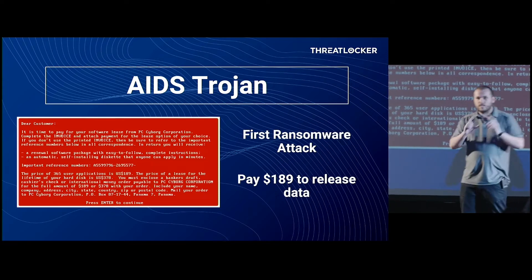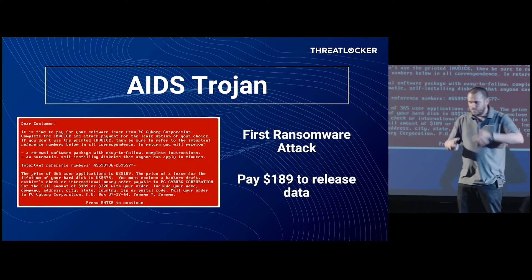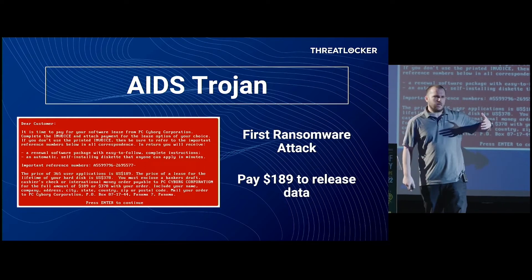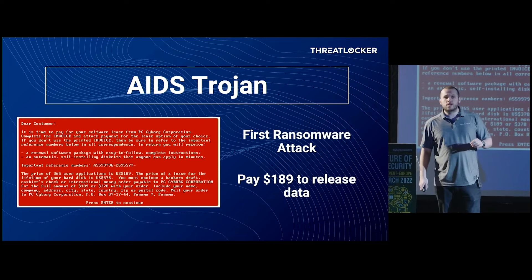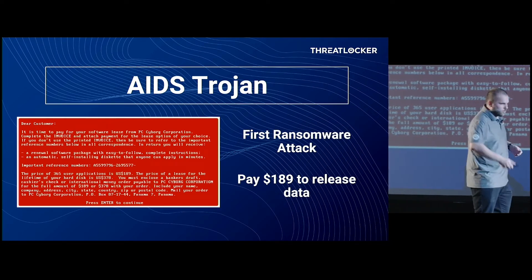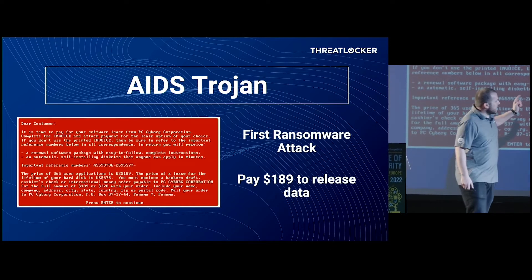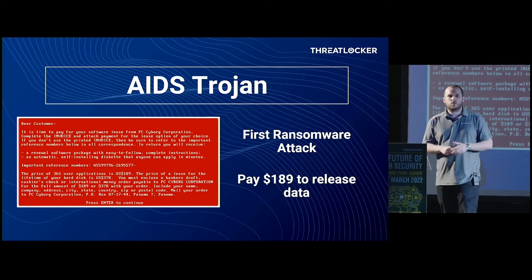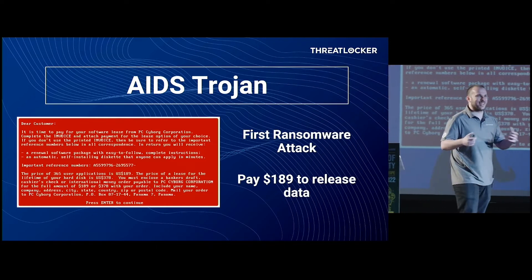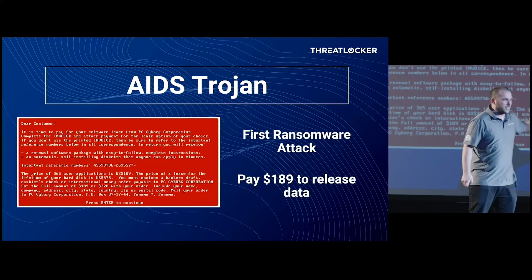Essentially it was a piece of malware sent out on floppy disks to AIDS researchers — that's where it got its name. It was actually sent out through a magazine. The researcher would plug it into their machine, it would install, and that malware was then active. After the 90th boot cycle, it would go ahead and essentially encrypt all of your data — exactly the same as ransomware as we know it today. Back in 1989, cryptocurrencies weren't exactly a thing; you had to send $189 to a PO box in Panama. The author, a guy called Joseph Popp, was caught pretty quickly — you can't hide that as well as you can with cryptocurrency.